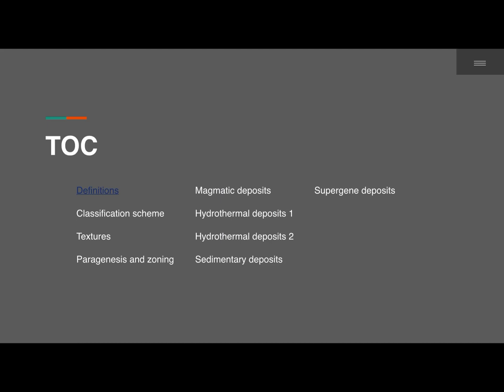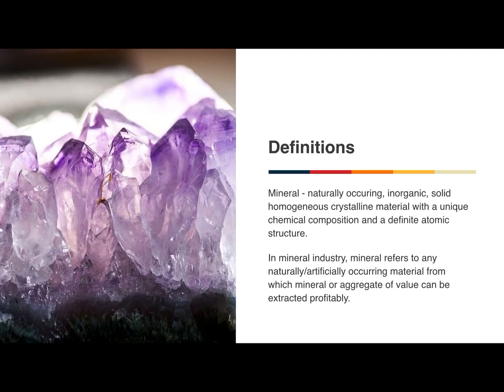We'll begin with a few fundamental definitions that are essential in learning the geology of ore deposits. Not all of them described here are strictly definitions; rather they are descriptions of terminologies. First off, we have 'mineral,' which is traditionally defined as a naturally occurring inorganic crystalline material with a unique chemical composition and a definite atomic structure. However, in the mineral industry, a mineral refers to any naturally or artificially occurring material from which metal or aggregate of value can be extracted profitably. It is considered natural if it is available in the earth, and artificial if it is synthesized in the laboratory — like synthetic graphite, which makes up a significant proportion of graphite consumed annually by the United States.